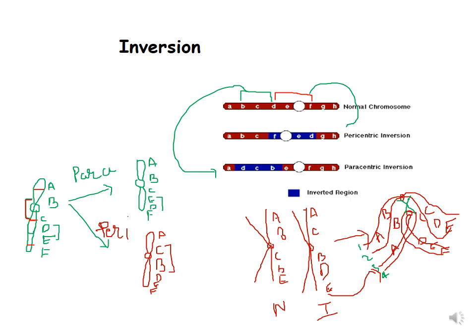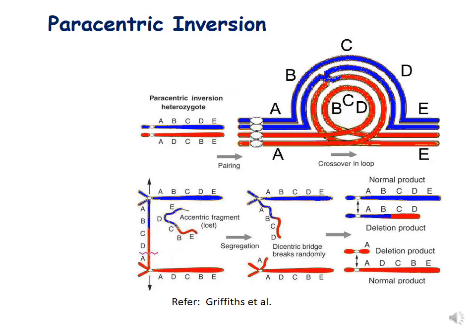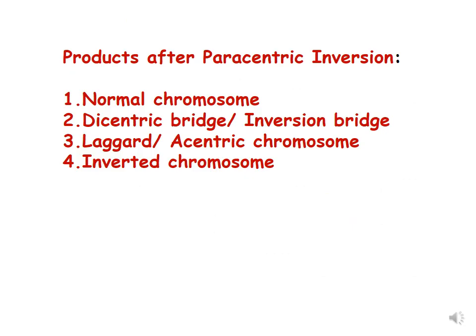Please refer to the paracentric inversion lecture to understand it better. This is the diagram from Griffiths which we have already discussed in the paracentric inversion lecture — how the two chromosomes form a loop, and the four products which are formed after paracentric inversion: a normal chromosome, an inverted chromosome, a dicentric bridge, and an acentric fragment. Please refer to that lecture for details.